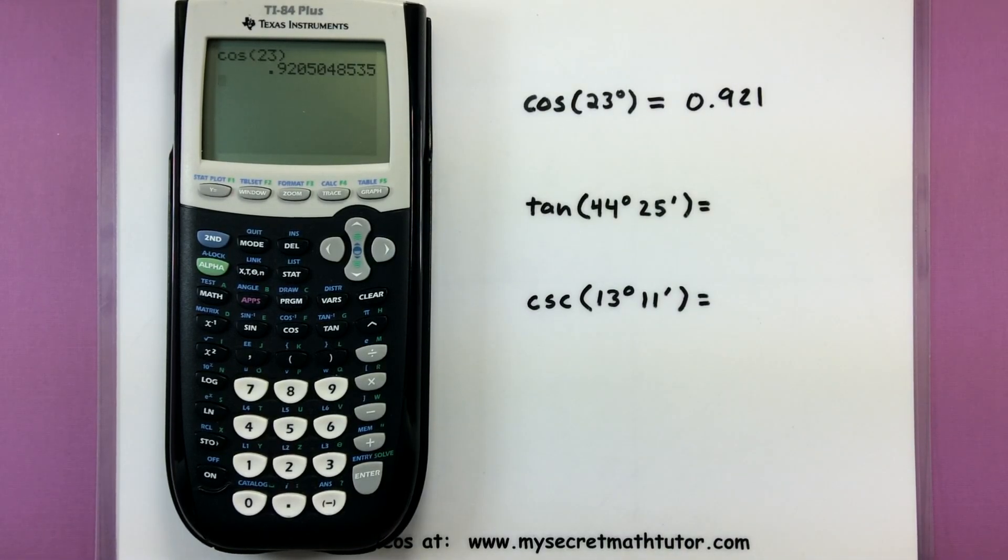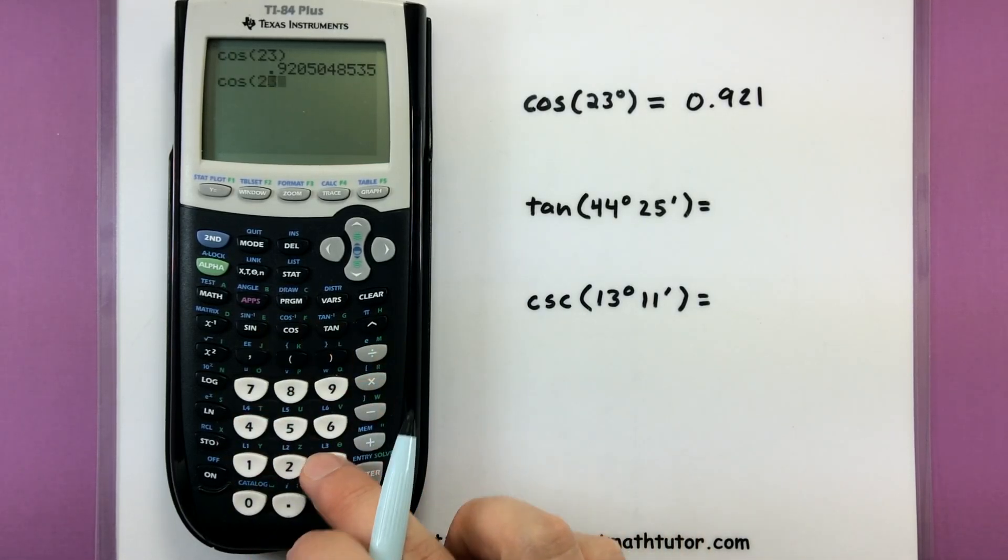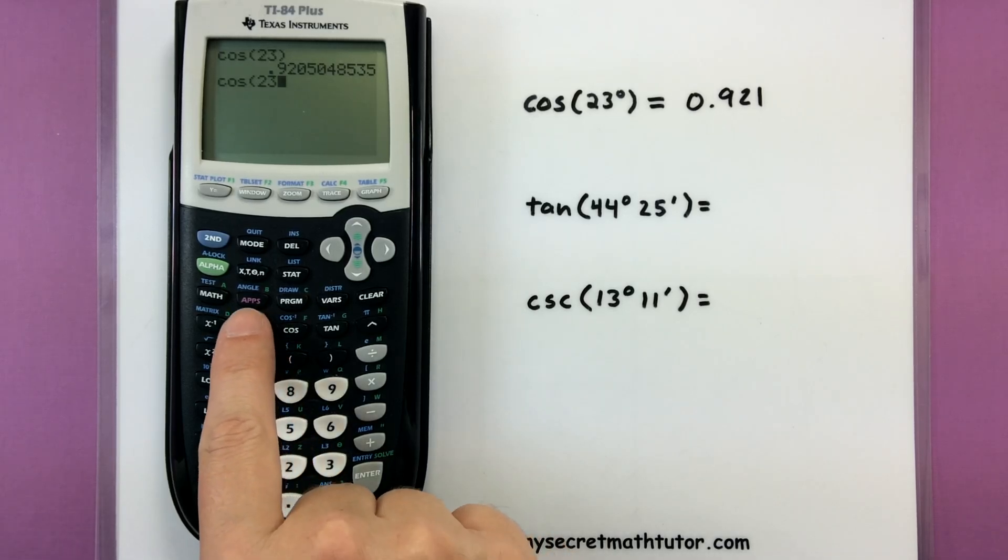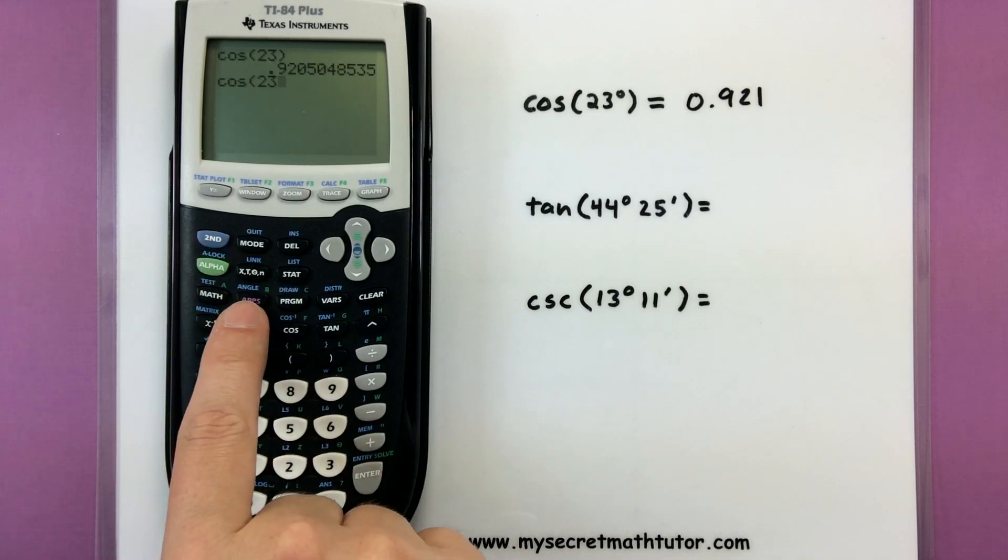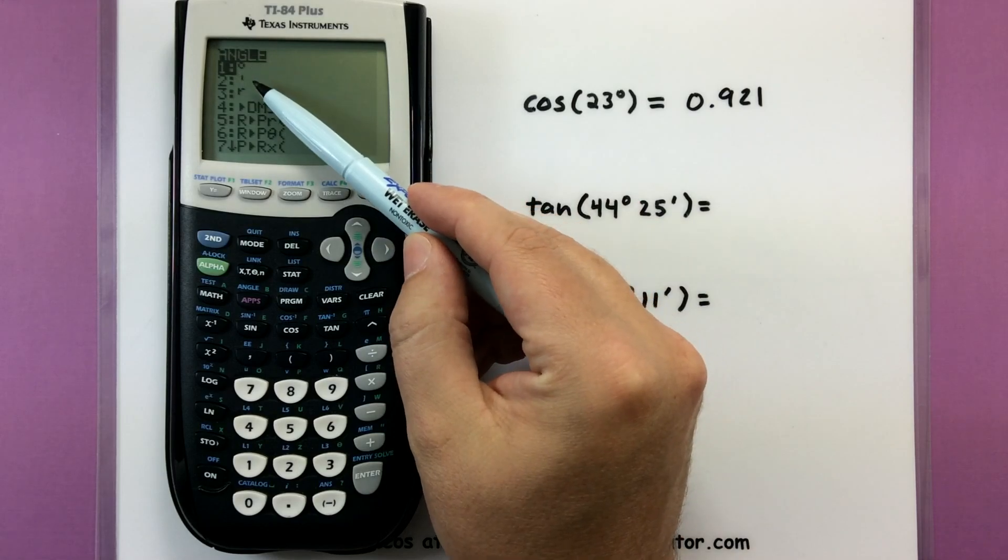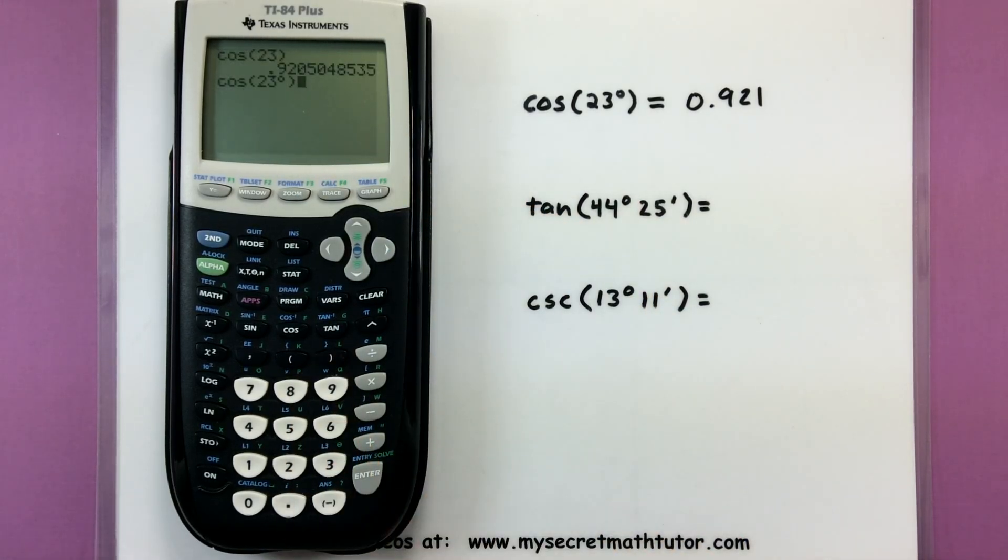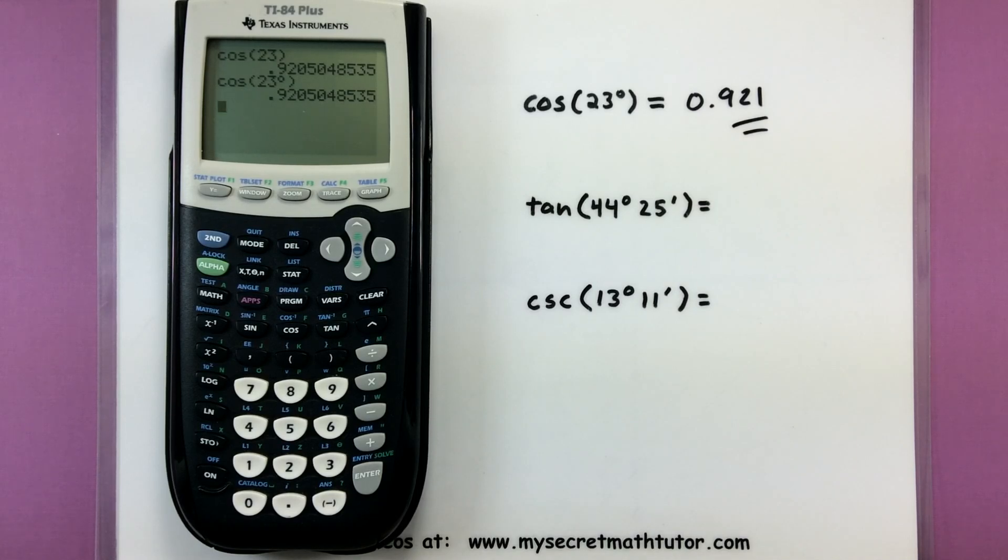Now if I really want to be specific on the type of angle that's in there, I could say cosine of 23 and then actually give it that little degree marker. To give it the degree marker, we have some angle options, so I can go to second and then press angle and here you'll see those units like the degree marker, minute marker, so I can use those to be a little more specific. So now it's cosine of 23 degrees and when I press enter sure enough I get that same answer, so nothing has really changed.